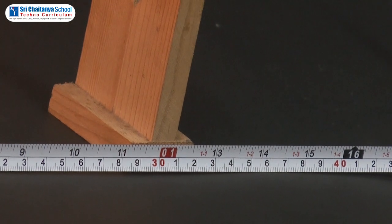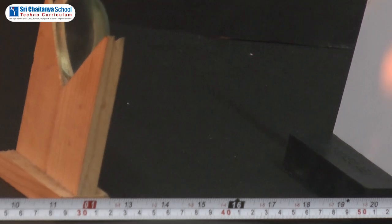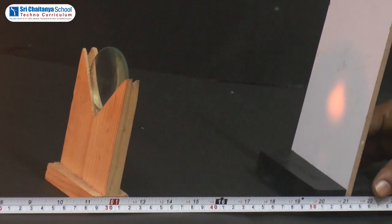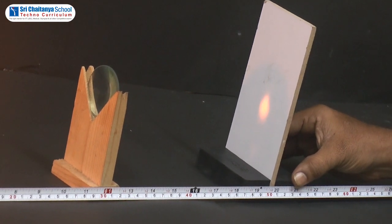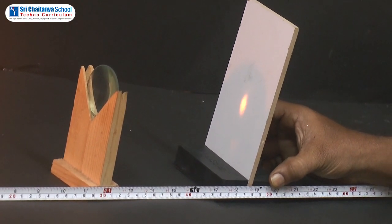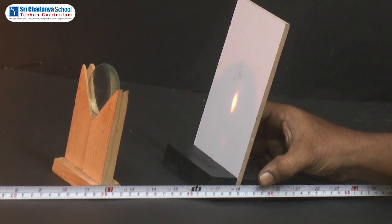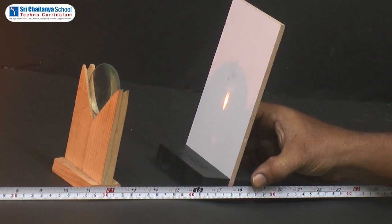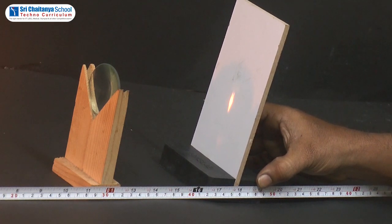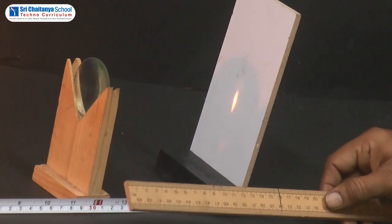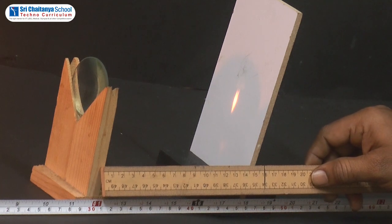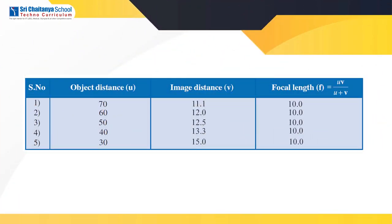We will repeat the same experiment for 30 cm object distance. Let us trace the image again by adjusting the screen. Observe here children — here again we will get an inverted image. By finding the image distance, that is the distance between the convex lens and the screen, here we get 15 cm. We will tabulate the values: object distance 30 cm, image distance 15 cm, and we get the focal length from the formula as 10 cm.